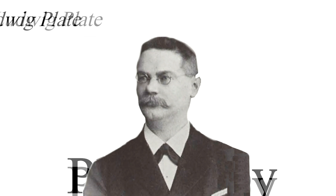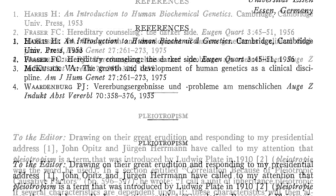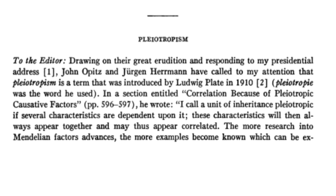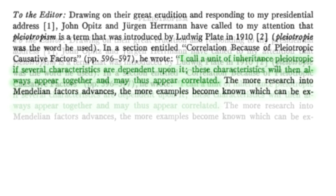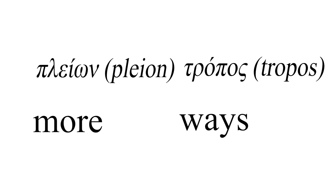In today's video we're going to explore the concept of pleiotropy. The term pleiotropy was first introduced by the German zoologist Ludwig Plath in a script celebrating his life's work, published in 1910. Ludwig described a gene as being pleiotropic if it had several characteristics dependent upon it. The term comes from the Greek words pleion meaning more, and tropos meaning ways.